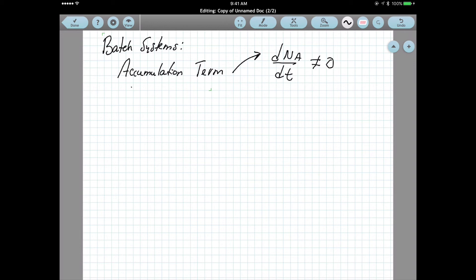So we need to define what is NA and see if we can find an expression on the number of moles in terms of conversion. So we know that NA can be defined as the moles initially in the reactor.